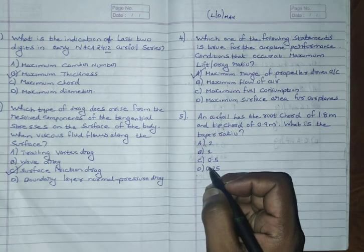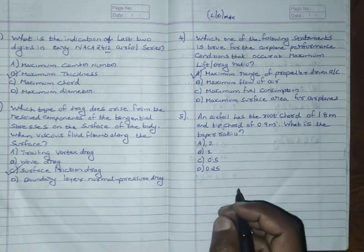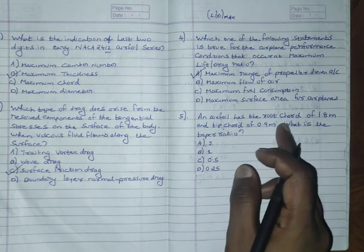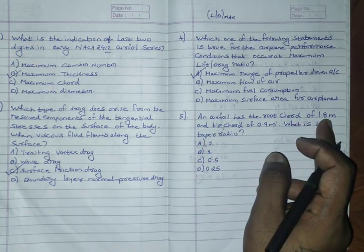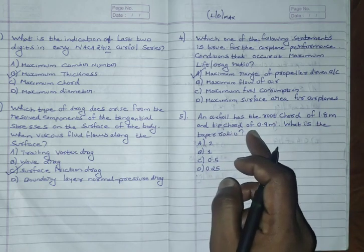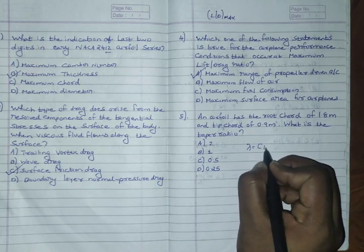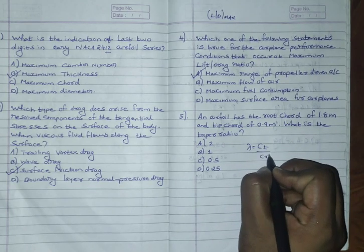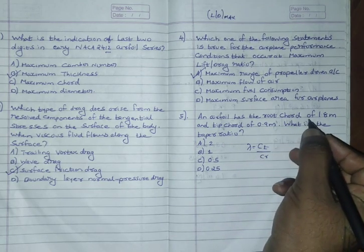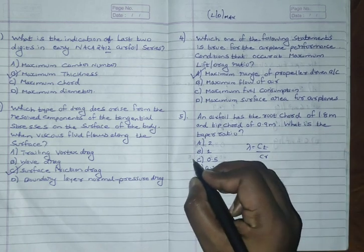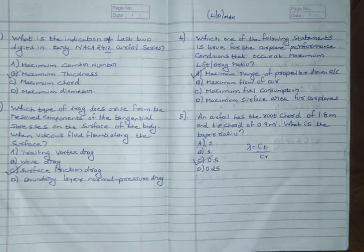An airfoil has the root chord of 1.8 meter. This is the fifth question and the tip chord of 0.9 meter. What is the taper ratio? Taper ratio lambda is equal to CT by CR, so 0.9 meter by 1.8. The answer is option C, 0.5.